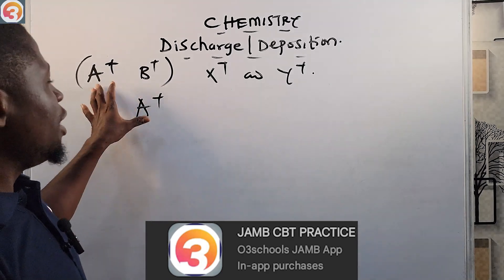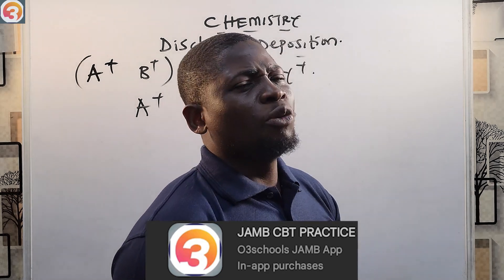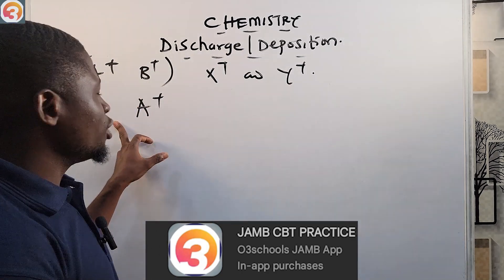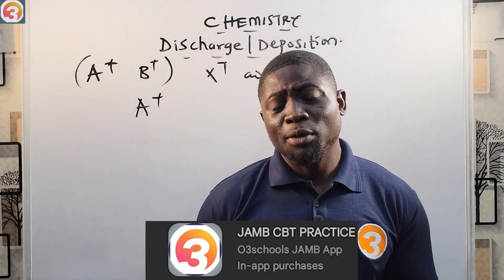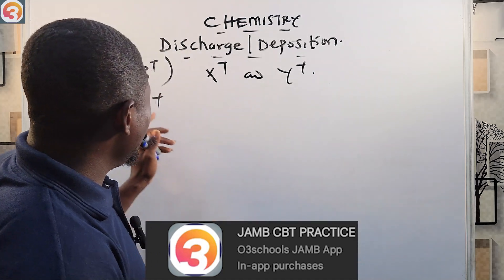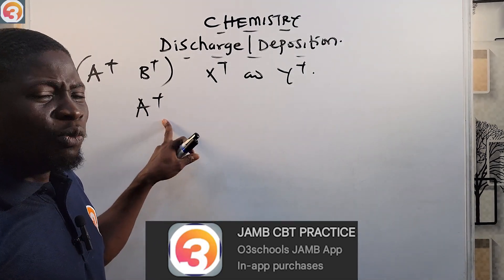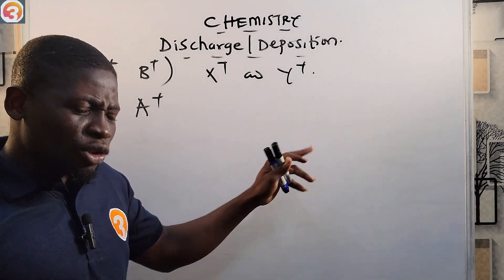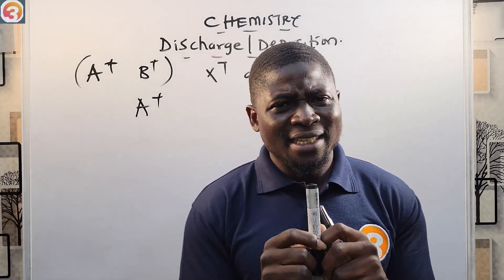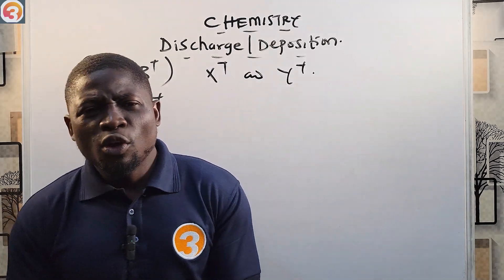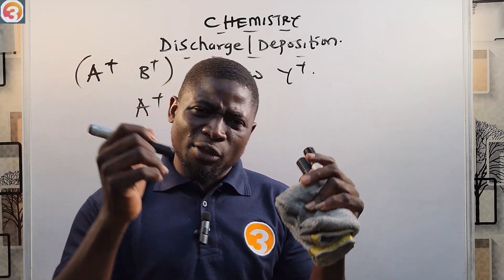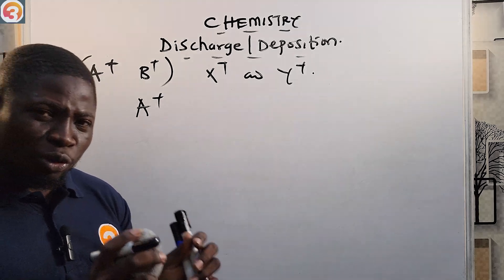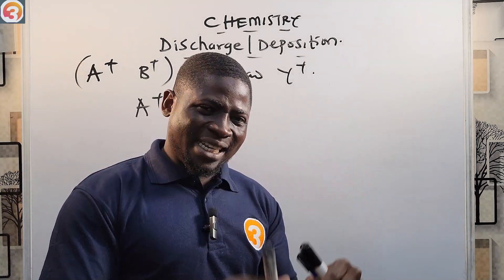Please understand: if two ions A-plus and B-plus are in competition for discharge at the cathode during electrolysis, and A-plus is discharged, it would be wrong to say B-plus was deposited. Instead, A-plus — the same ion that was discharged — is what gets deposited on the electrode. Whatsoever ion is discharged from the solution, that same ion will be deposited on the electrode.